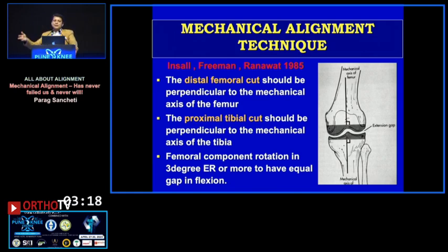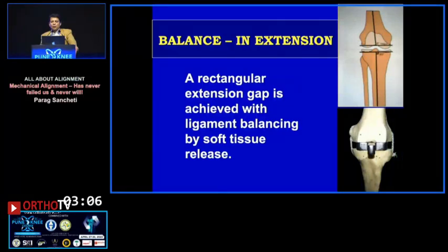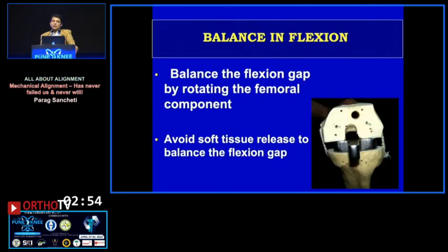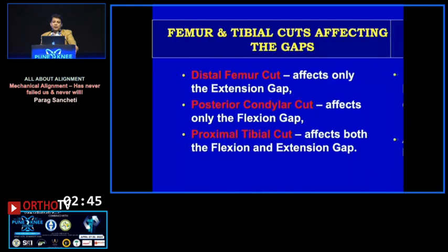Therefore, if you bring these knees to neutral you won't go wrong. This is a straightforward technique our seniors have taught us: distal femur cut at 90 degrees to the mechanical axis, proximal tibia cut at 90 degrees, rotate the femoral component to achieve equal flexion and extension gaps. For extension gap balancing, do the releases; for flexion gap balancing, rotate the femoral component. I have used this standard technique for more than 20 years with consistently good results.